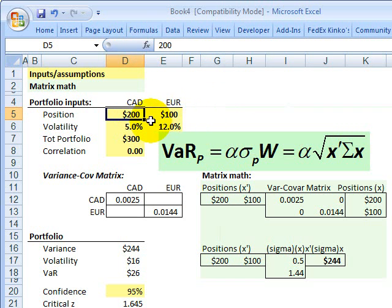Here, a $200 million U.S. position in Canadian dollars, and then also a $100 million position in euros. And also I have an assumption about the volatility of each currency. So we'll assume the Canadian dollar has 5% volatility and the euro has 12% volatility.